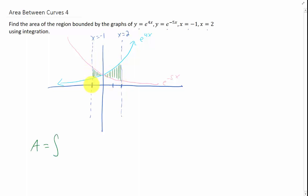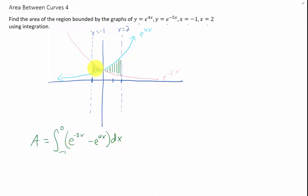The x values on our first piece we know right off the bat. They go from negative 1 to 0. In this region, from x equals negative 1 to 0, the upper function is e to the negative 5x and the lower function is e to the 4x. We subtract the upper function minus the lower function and that will give us the area of this first region.